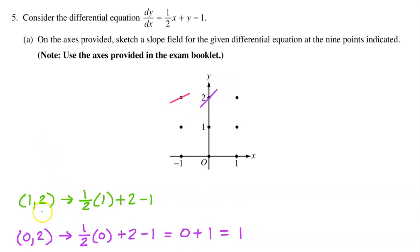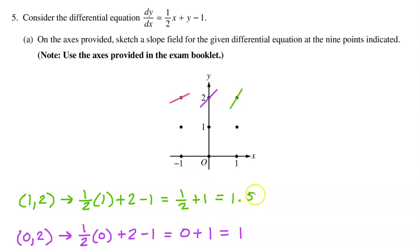At the point (1, 2), we have one-half times 1 plus 2 minus 1. This gives a decreasing slope — try to make it a little bit steeper than a 45-degree angle.